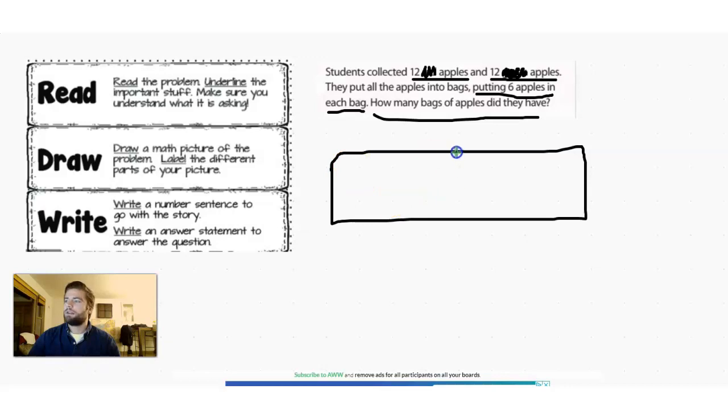let's divide it into two because we know students collected two groups of 12 apples. So one is the 12 red and another one is the 12 green. And I know I said to erase the green and the red colors, but we can still label them here actually. That might be helpful. R for red and G for green.